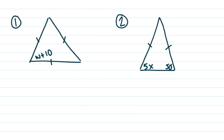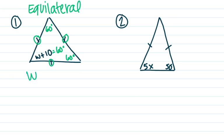Here on number one, I see that I have tick marks on all three sides, which means that this is an equilateral triangle. That tells me that all of these angles here in this triangle are supposed to be 60 degrees, including this one where we're missing a piece of it. When I understand that W plus 10 is supposed to equal 60, that actually gives me an equation to use in order to find what W is supposed to be.